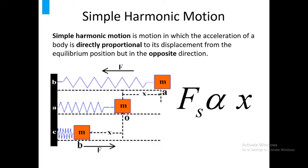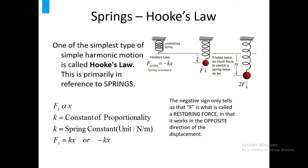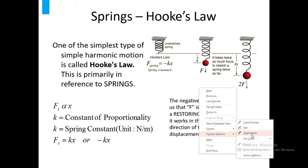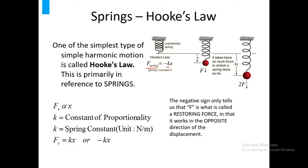What is Simple Harmonic Motion or SHM? Simple Harmonic Motion is motion in which the acceleration of a body is directly proportional to its displacement from the equilibrium position but in the opposite direction. For example, your spring is moving to the right, your restoring force is moving to the left. One example of SHM is Hooke's law that is primarily in reference to spring. The formula for Hooke's law is F equals negative kx, where F is the restoring force, k is the spring constant in newtons per meter, and x is the displacement.